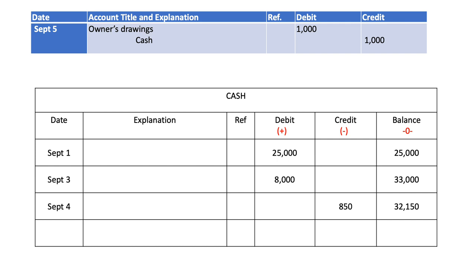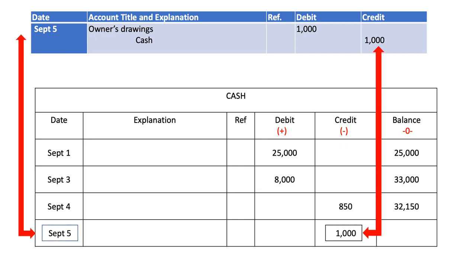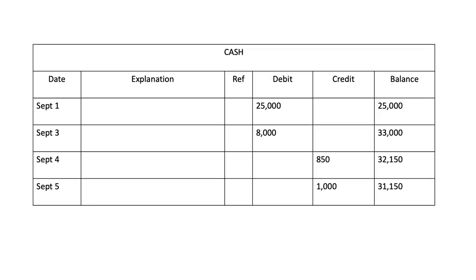The last transaction is debit owner's drawings and credit cash. Cash is on the credit side, so I post it: I put the date, add $1,000 to the credit side, and deduct $1,000 from the previous balance. So $32,150 minus $1,000 gives a new balance of $31,150. This is how the completed ledger looks — anyone can see that the current balance at September 5 was $31,150.